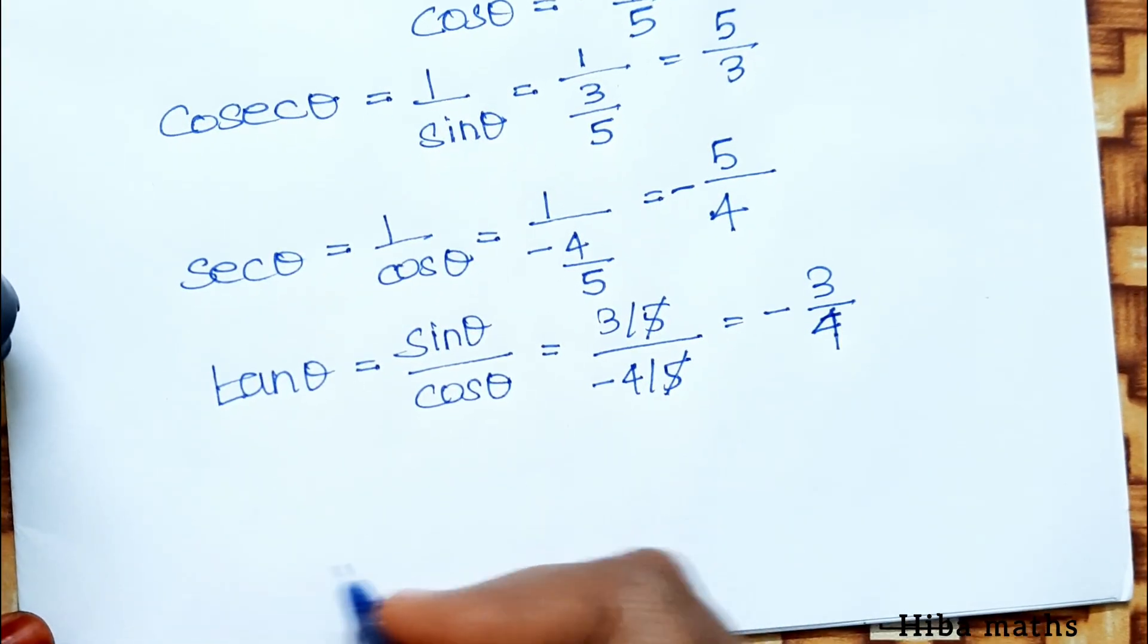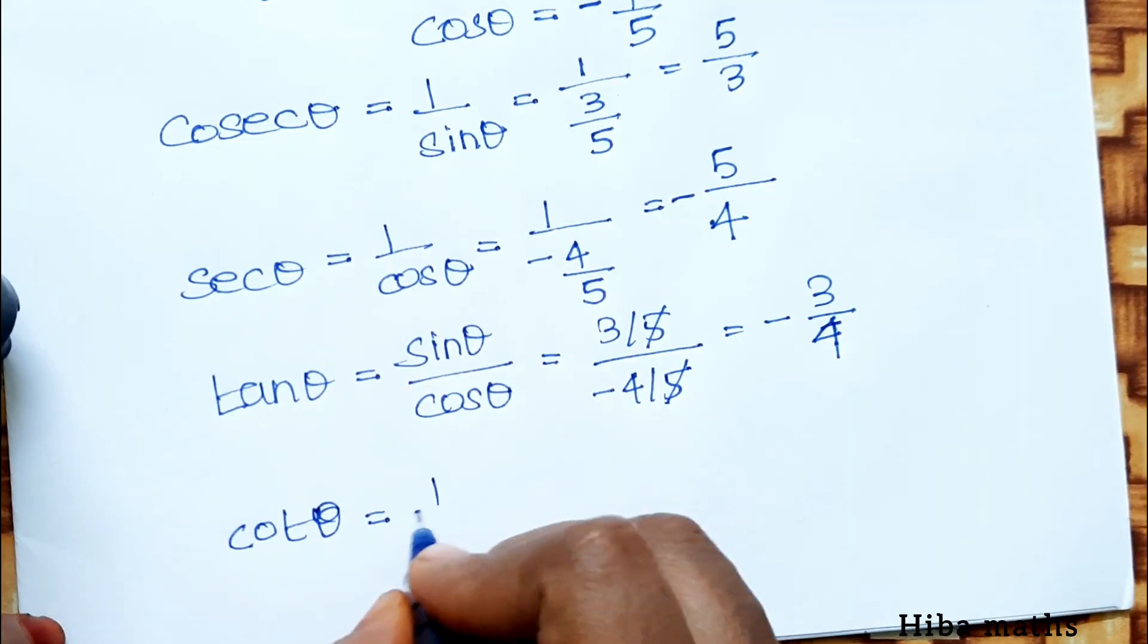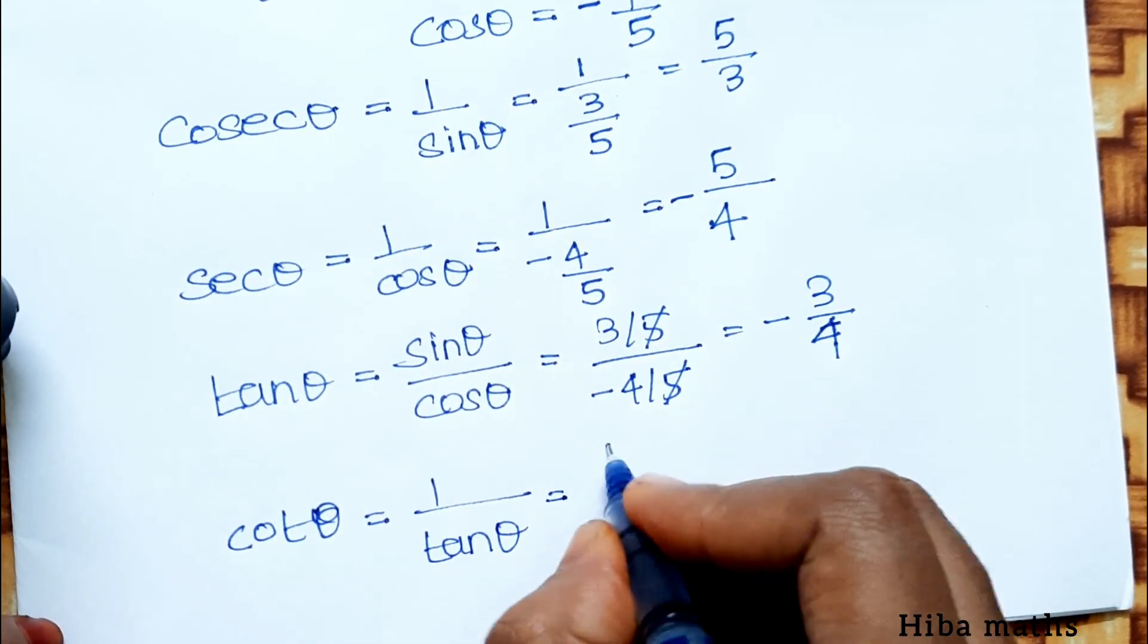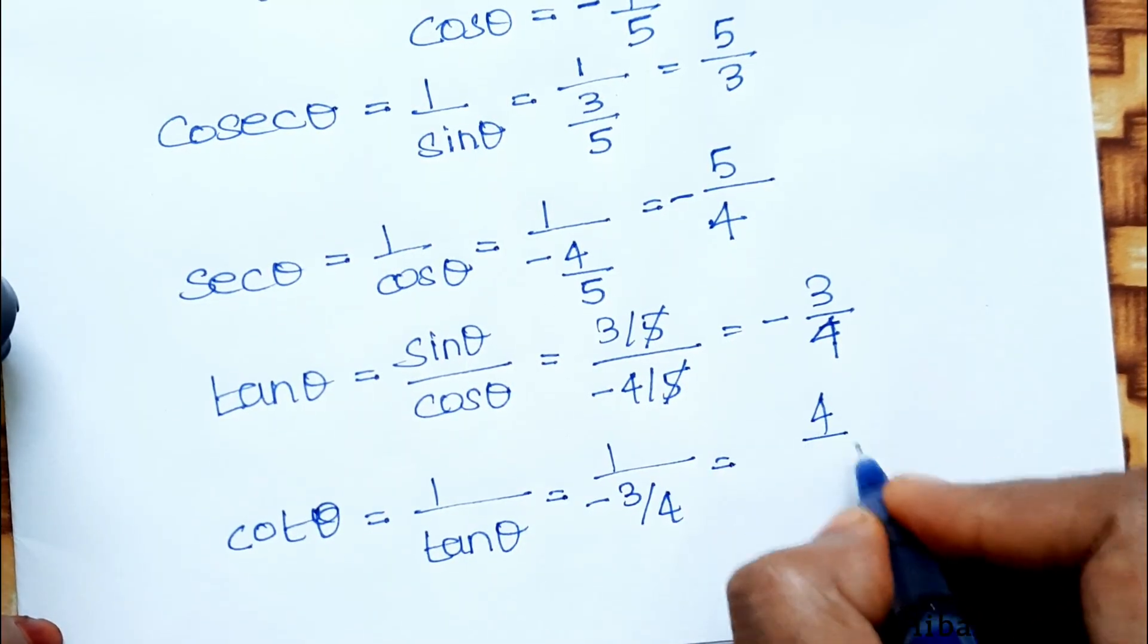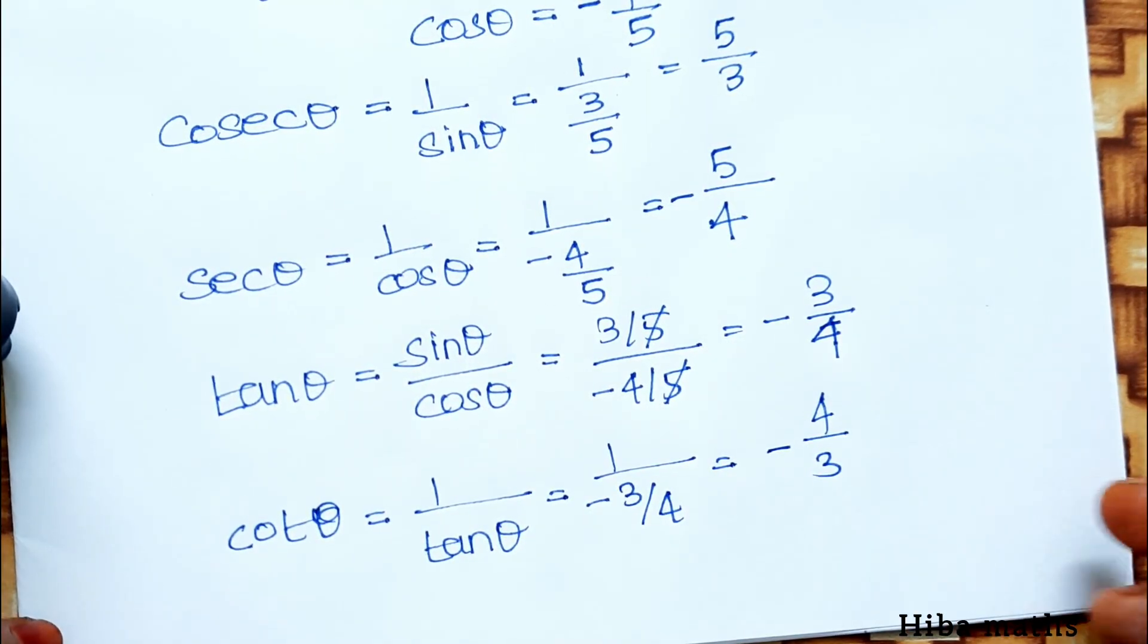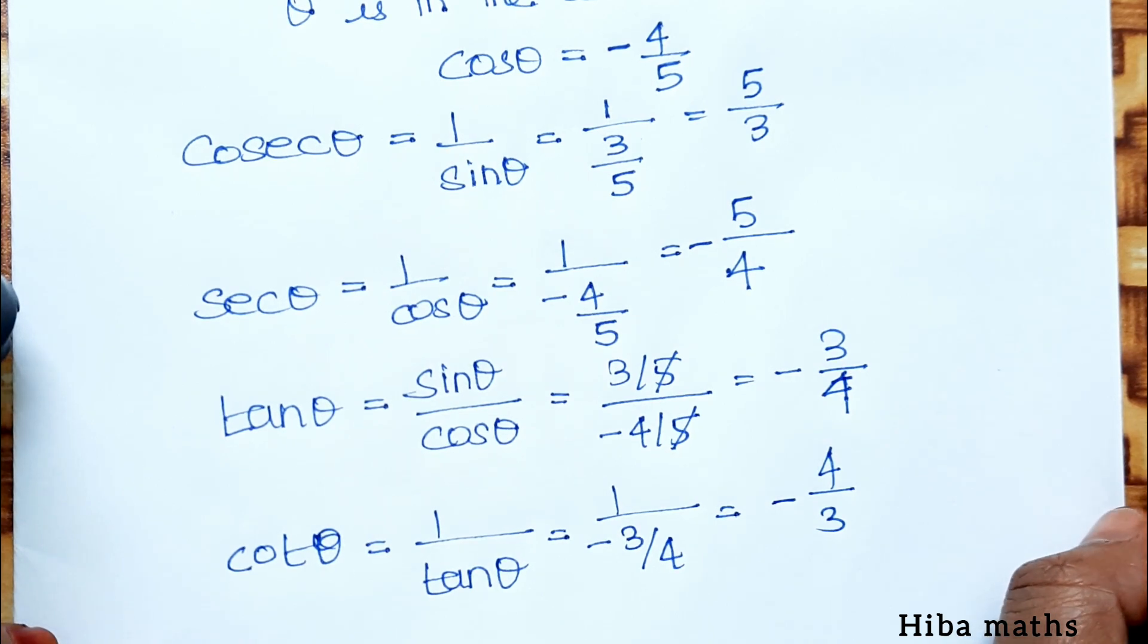Cot θ equals 1 by tan θ, which equals minus 4 by 3. If you don't understand, leave your doubt in the comment section. Thank you so much for watching.